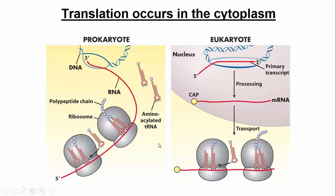These huge blobs in the background — these two circles — are the ribosomal subunits. In prokaryotic organisms, the small subunit is called 30S and the big subunit is called 50S. In eukaryotes, the small subunit is called 40S and the big subunit is called 60S. In total, the prokaryotic ribosome is called 70S, and the eukaryotic ribosome is called 80S.